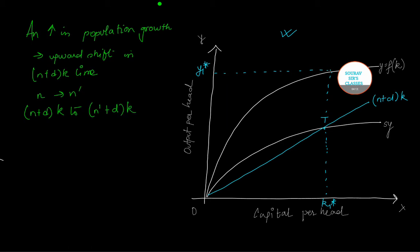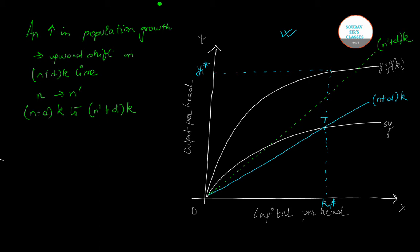What we will do is we will increase the population growth rate. Earlier it is n, so we will increase it to n'. This was the initial line, so we get the new line as this. Let us mark it on the graph also. I will make it dotted, it becomes easier.